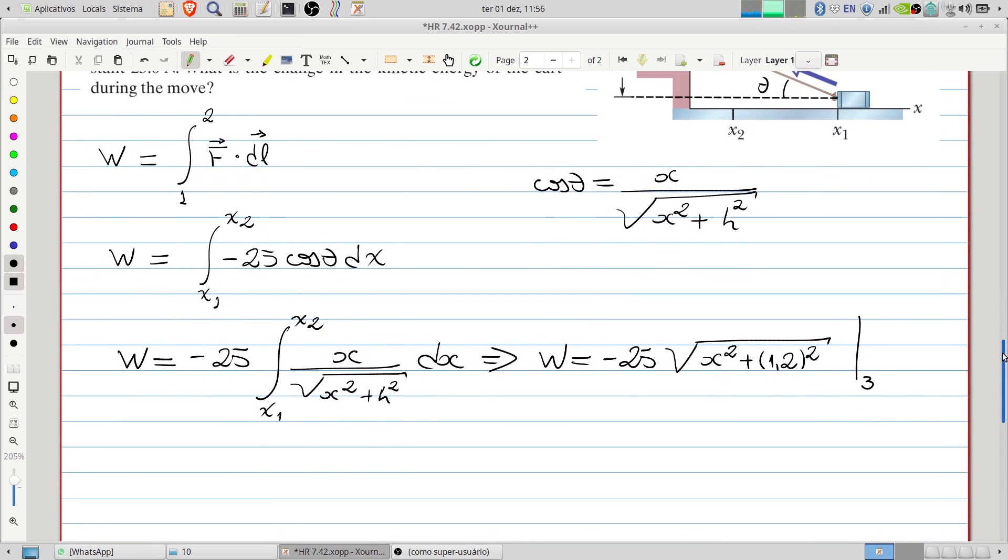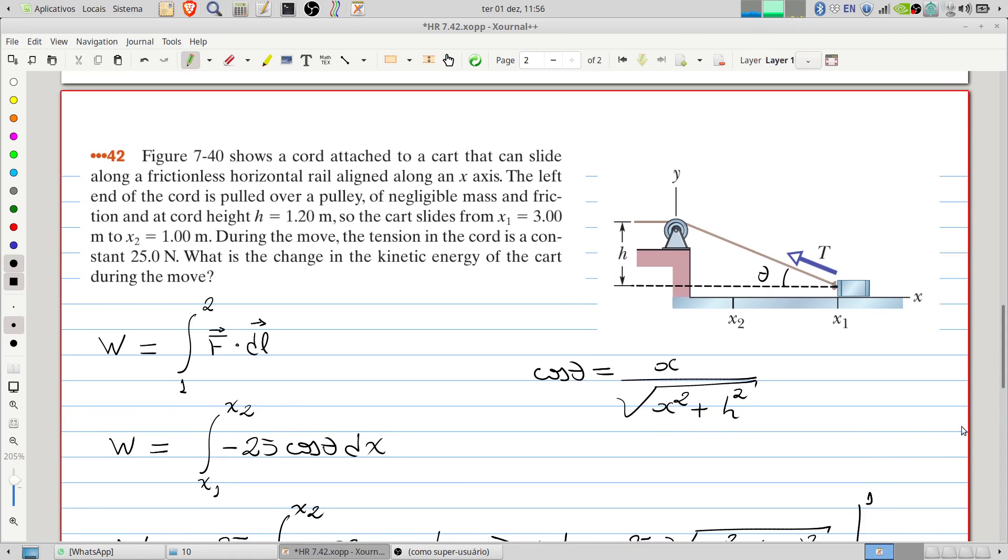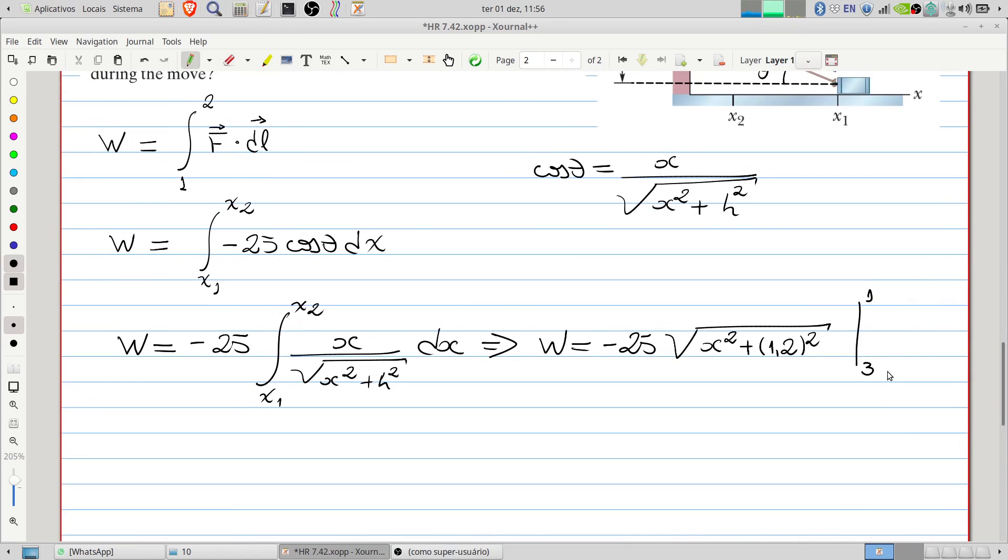Therefore we will have the work equals minus 25 times the square root of 1 plus 1.2 squared minus square root of 3 squared plus 1.2 squared.